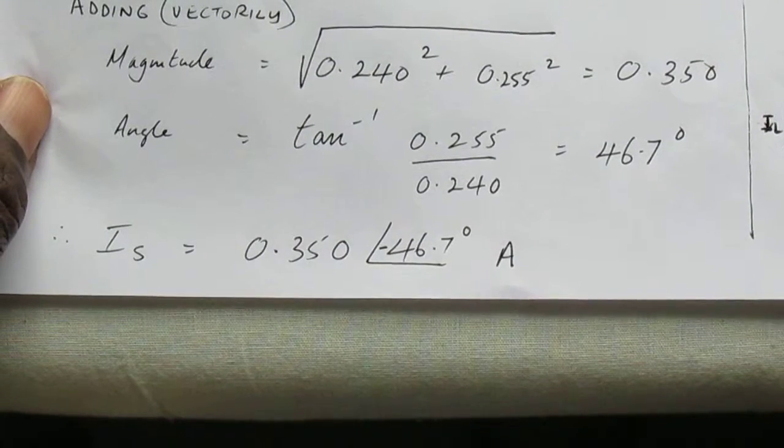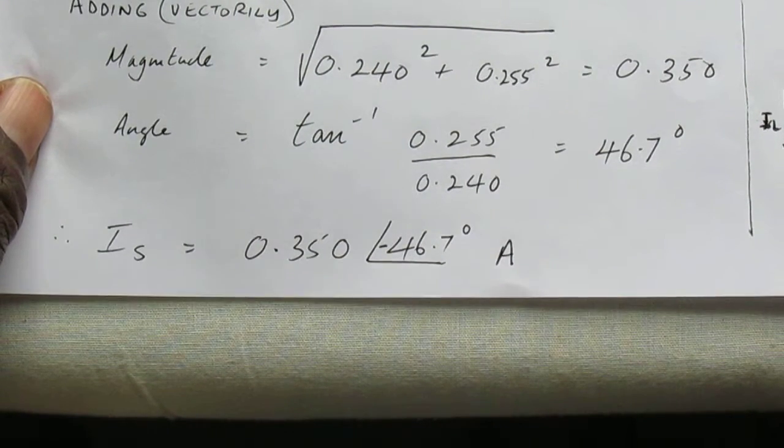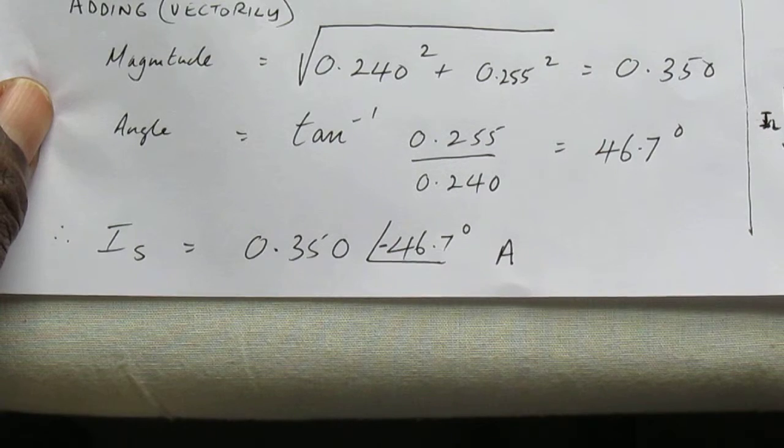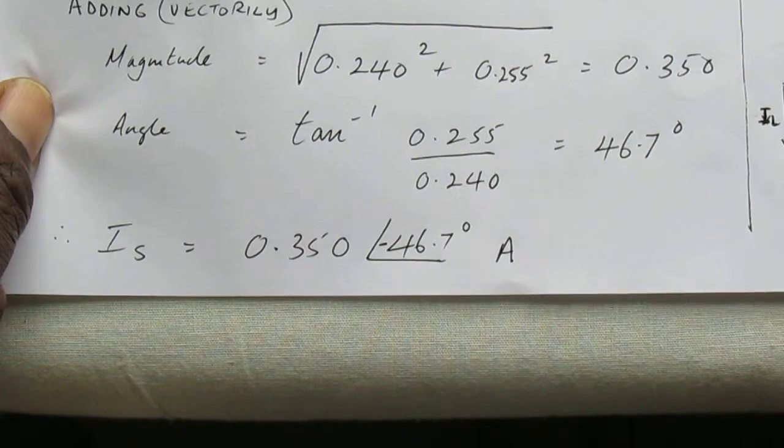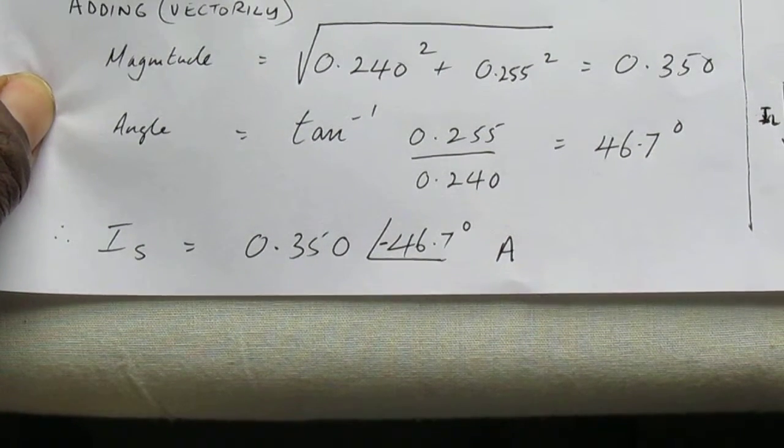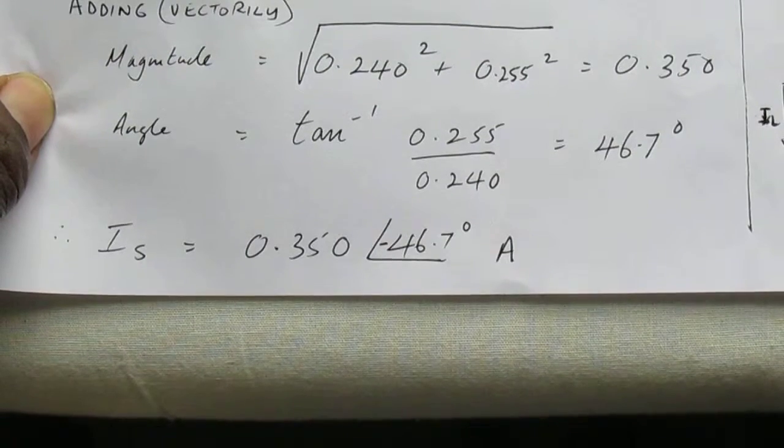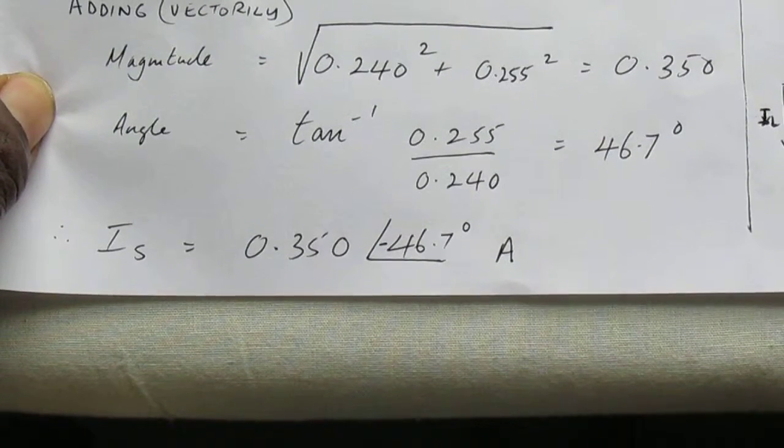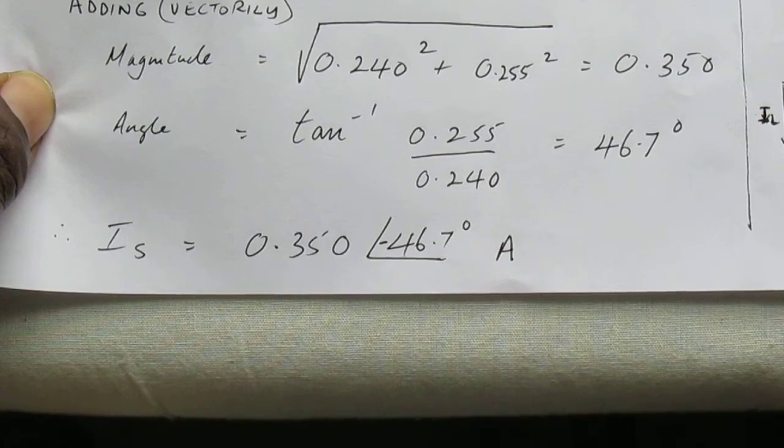So the supply current is 0.35 angle negative 46.7 degrees. This concludes the data and circuit analysis for a parallel resistor inductor AC circuit.